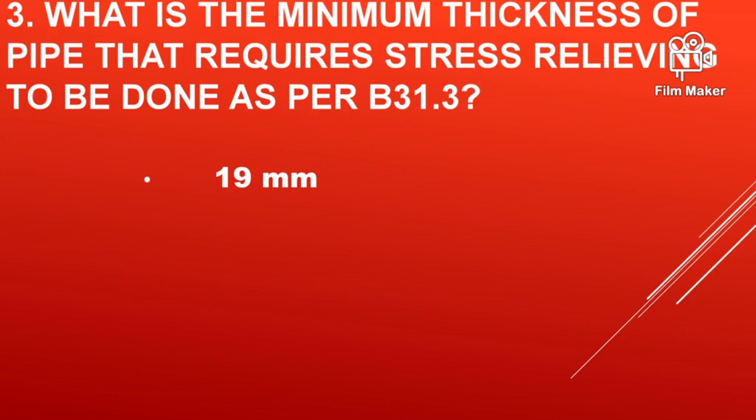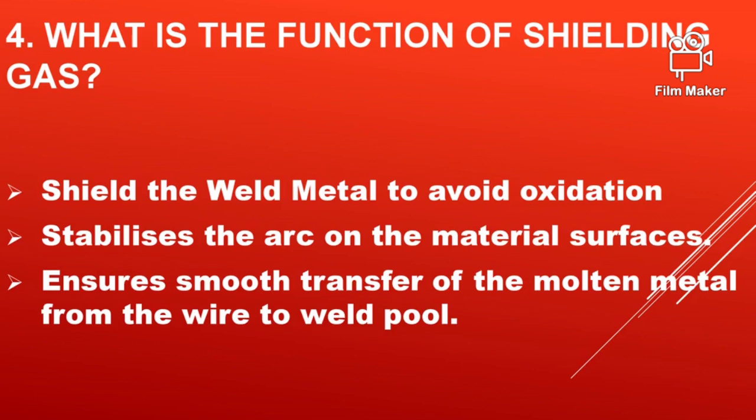What is the minimum thickness of pipe that requires stress relieving as per B31.3? That is 19 mm wall thickness. The pipe which has 19 mm wall thickness or above must go through post weld heat treatment after completion of welding to relieve the residual stresses.